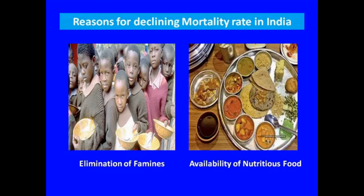Let us now examine the reasons for the declining mortality rate. Mortality rate or death rate is the number of deaths per thousand population in a given year. First, the elimination of famines: besides the famine of 1943, no other serious famine has occurred in this country. Although famine-like conditions emerged in 1987 in states of Gujarat, Rajasthan, Haryana, Bihar and Madhya Pradesh, these were effectively combated to prevent serious loss of life. Second, availability of nutritious food: people are now getting more nutritious and balanced diet than before, and the government is also paying more attention to this, which has helped in reducing the death rate.